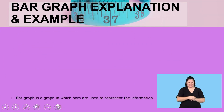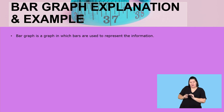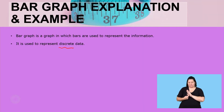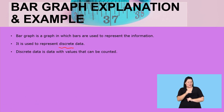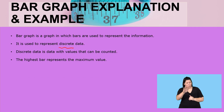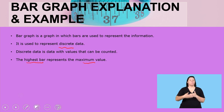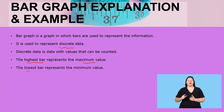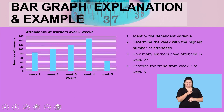What is a bar graph? A bar graph is a graph in which bars are used to represent the information. It is used to represent discrete data. Discrete data is data with values which can be counted. The maximum value will be shown by the highest bar, and the shorter bar will tell you there is the minimum value. Those are the important things to know when solving questions based on the bar graph.